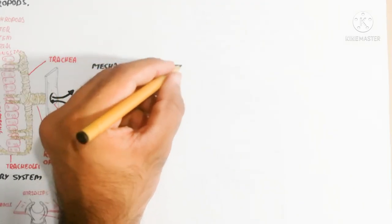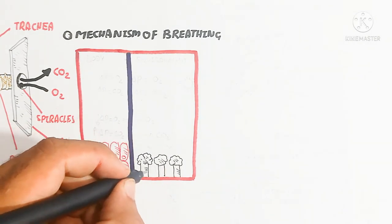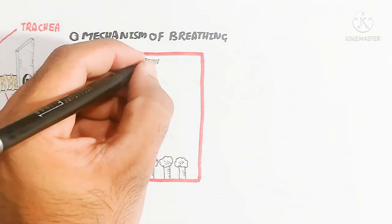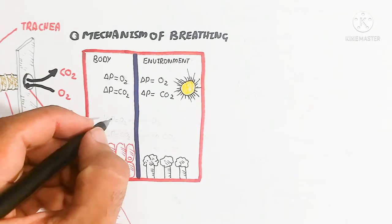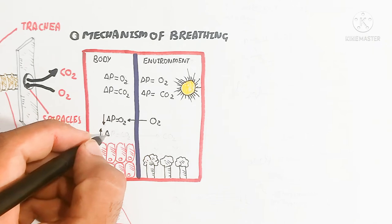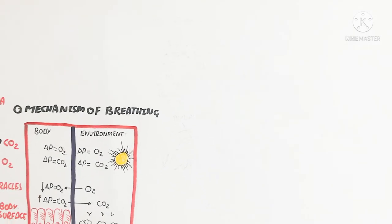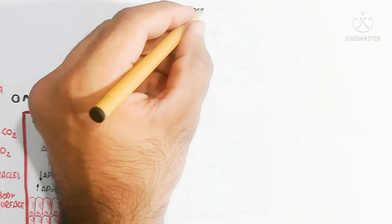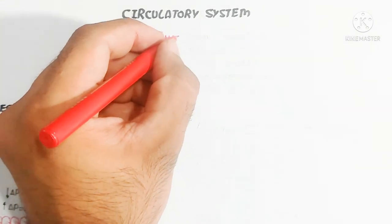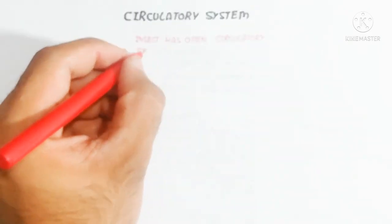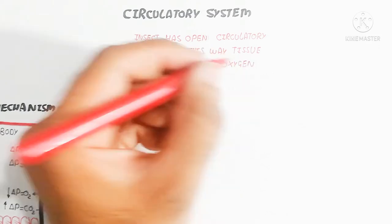Regarding the mechanism of breathing: in the environment, oxygen makes up approximately 21% of all gases. The amount of oxygen is higher in the environment than inside the body. When the partial pressure of oxygen inside decreases, oxygen moves from higher partial pressure in the environment to the lower partial pressure inside, through the spiracle. Vice versa, when carbon dioxide increases inside, it moves outward.